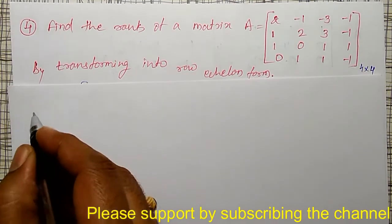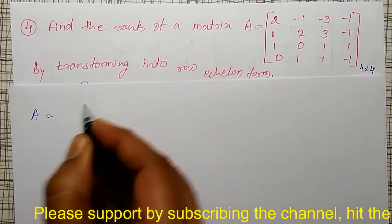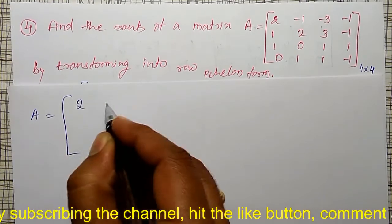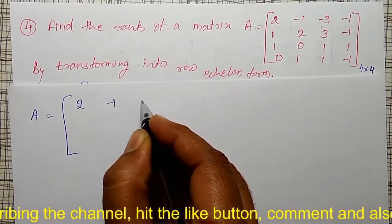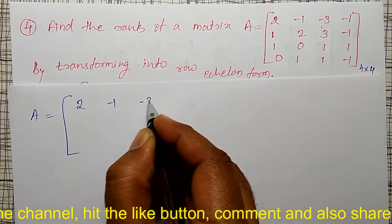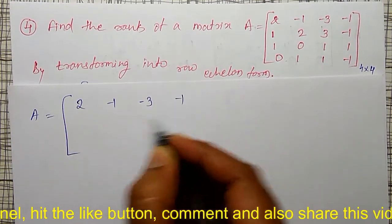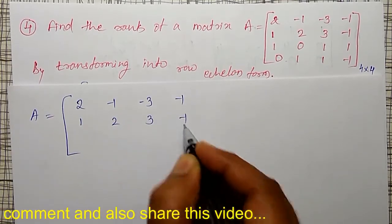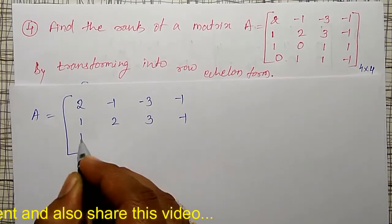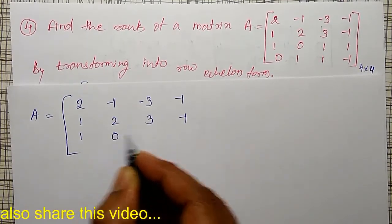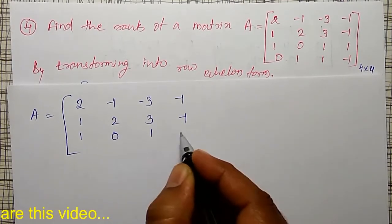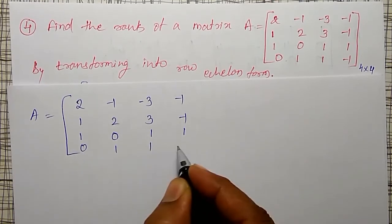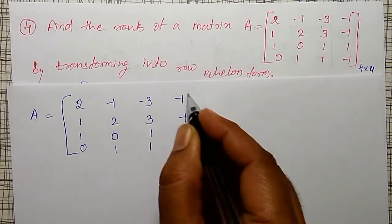Let me rewrite the given matrix as: 2, −1, −3, −1; 1, 2, 3, −1; 1, 0, 1, 1; 1, 0, 1, 1, −1.